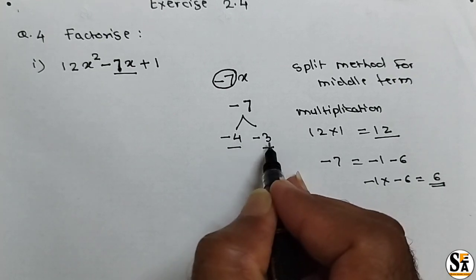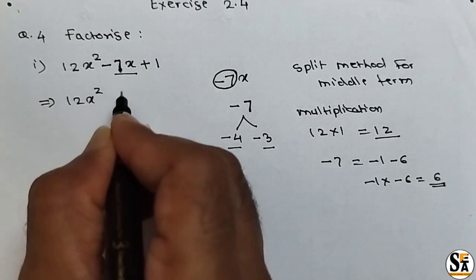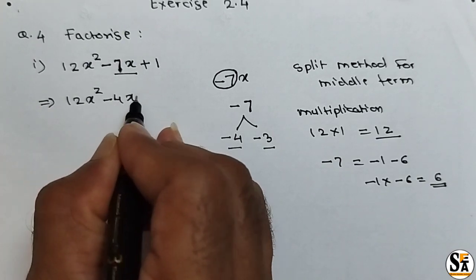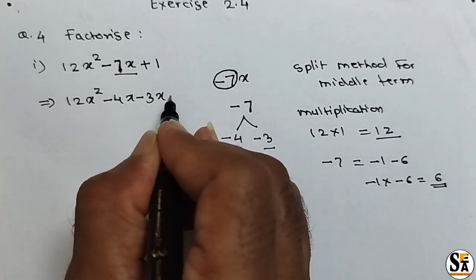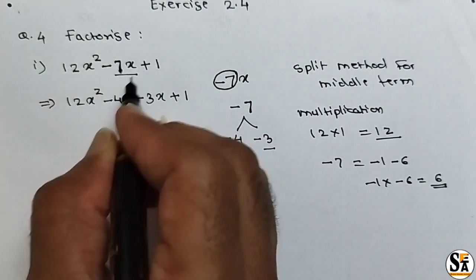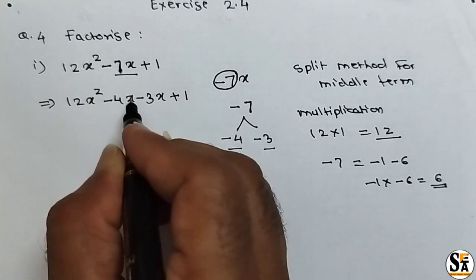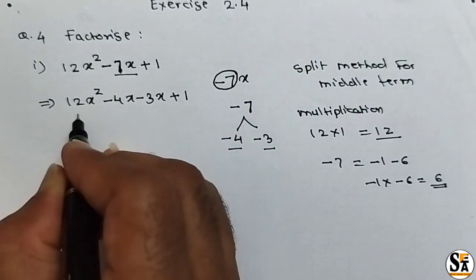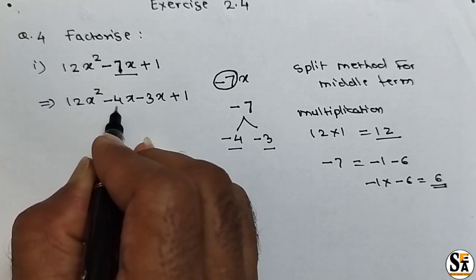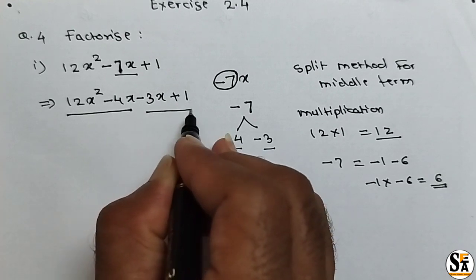So we will use these two factors. In the next step, we write 12x squared, and instead of minus 7x, we write minus 4x minus 3x, with the last term as it is. We have now converted this polynomial into four terms. Initially we had three terms; the middle term has been split into two terms, giving us four terms. Now take common factors from the group of the first two terms and the group of the last two terms.